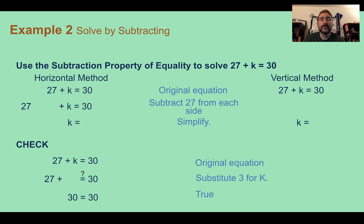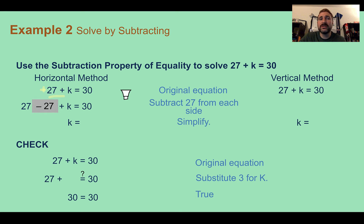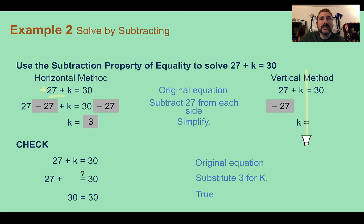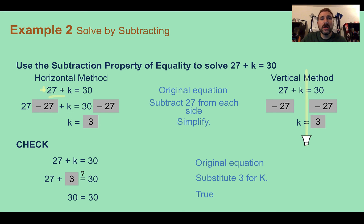Example 2: Solve by subtracting. Use the subtraction property to solve 27 plus k equals 30. We look at what's there — plus 27 — and do the opposite, which is subtract 27 from both sides. That makes the 27 cancel to 0, and on the right side, 30 minus 27 gives us k equals 3. For the vertical method, draw the mirror line, subtract 27 from both sides, and we end up with 3. Checking: 27 plus 3 equals 30 — yes, that's correct.